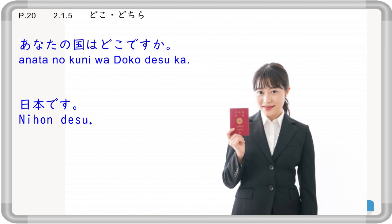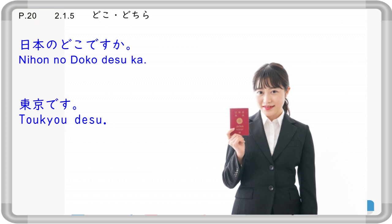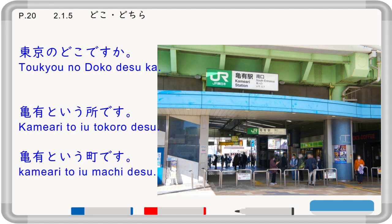If you are asked 'anata no kuni wa doko desu ka?', you can answer your country, like 'Nihon desu'. If you want to know more detail, you can also ask 'Nihon no doko desu ka?' — which part of Japan. And if you want to know even more detail, you can ask 'Tokyo no doko desu ka?' — where in Tokyo, or which part of Tokyo.